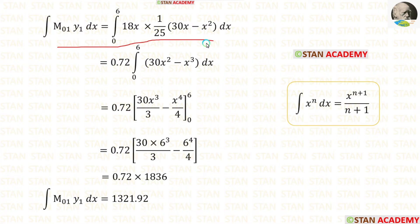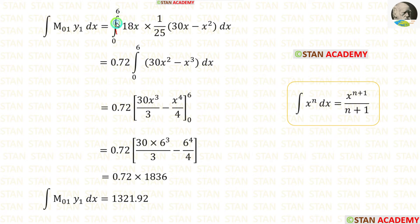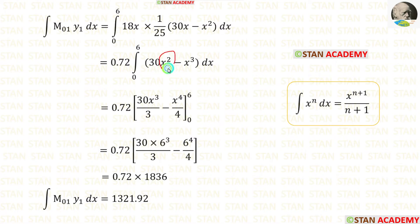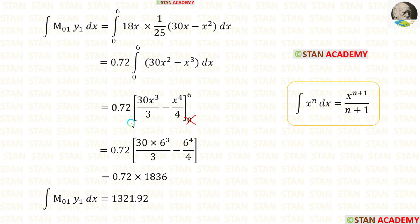We can also do the integration manually, though it will take more time. For manual integration, we apply the standard formula. First, take the constants outside — multiply 18 and 1/25 and take it outside. Then integrate: x² integrates to x³/3, and x³ integrates to x⁴/4. Apply the limits — no need to apply the lower limit 0, as it gives zero; only apply the upper limit 6. Finally, the integration of m0_1·y1·dx equals 1321.92.